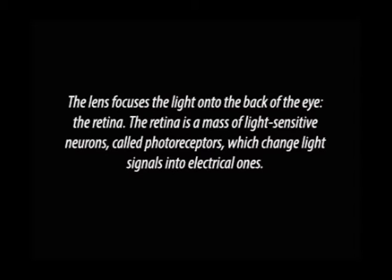Light hits the lens, which focuses it onto the back of the eye — the retina. The retina is sensitive to light. The mass of neurons there are called photoreceptors, which change light signals into electrical ones.